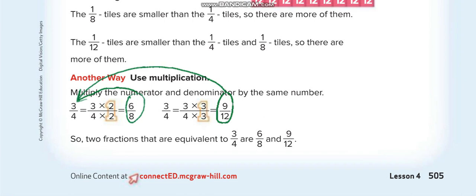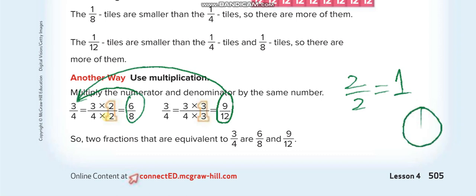Notice that two over two is written as a big one. If the numerator and denominator are the same, that equals one. For example, if I have one and divide it into two parts, the denominator shows the total parts and the numerator shows the shaded parts — two out of two means the whole is shaded, so it equals one. Two over two equals one, three over three equals one, four over four equals one — any number over itself equals one.